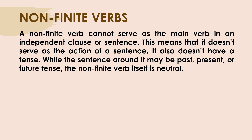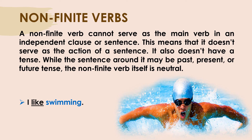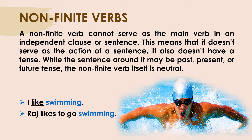For example: I like swimming. The action in this sentence is that the person likes, so 'like' is the main or finite verb. We have another word here — 'swimming' — and you might think it is a verb, but is the person swimming? No, no action is being done. The action here is 'like.' So 'like' is the finite verb, and 'swimming,' which is not an action but looks like a verb, is the non-finite verb. Similarly, Raj likes to go swimming — the action Raj does is to like, and 'swimming' is again the non-finite verb.